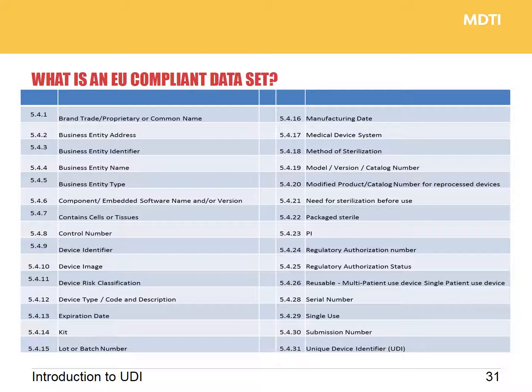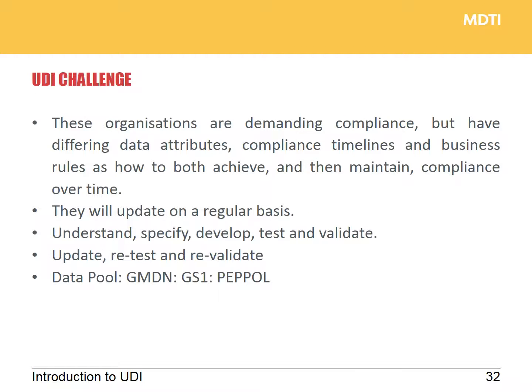In regards to the EU UDI rule, it hasn't yet been formally published. The fields will be somewhat similar to the NHS and the FDA. We'll be updating users on the EU rule as soon as we get the draft, which should be sometime in the next 30 to 60 days. In summary, we have different organizations demanding compliance with different data attributes, different timelines, and different business rules as to how to achieve and then maintain compliance over time. It is a big project. The key is to understand, specify, develop, test, and validate systems and then keep them updated as rules change. Datapool, GMDN, GS1, and PEPOL will be mandatory for the NHS and for Europe.